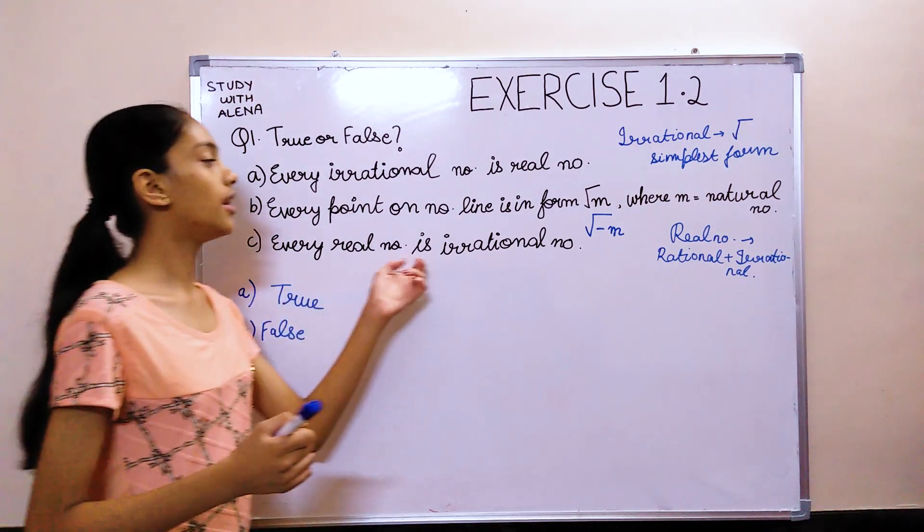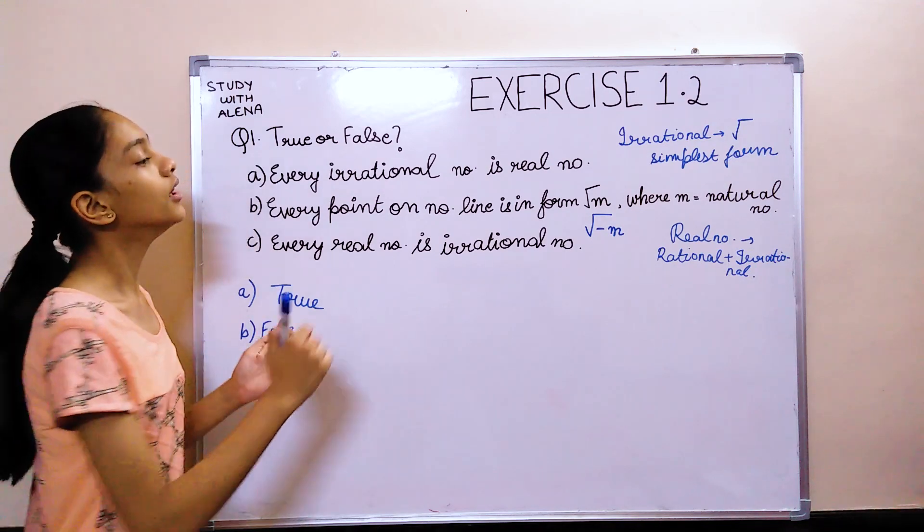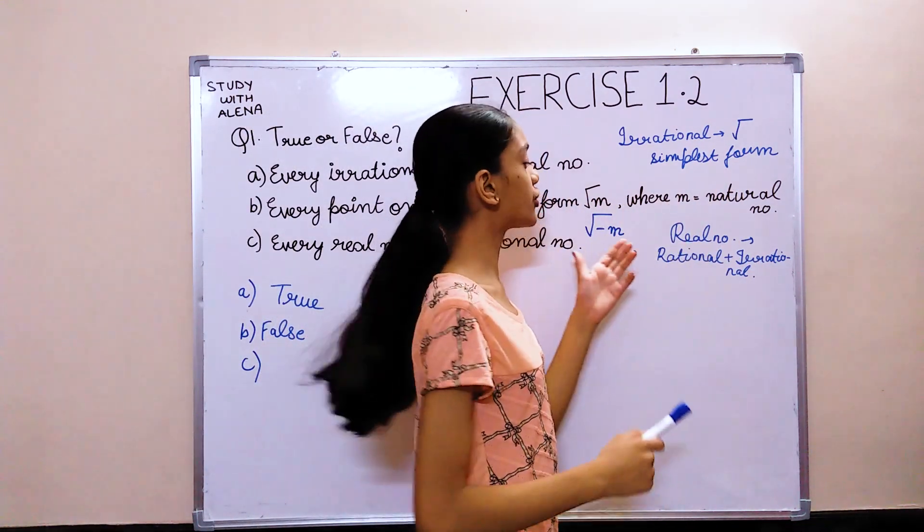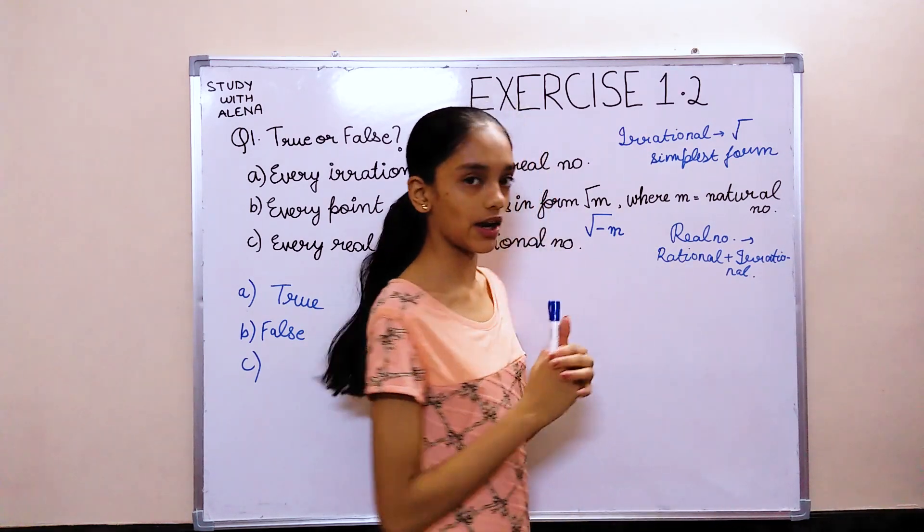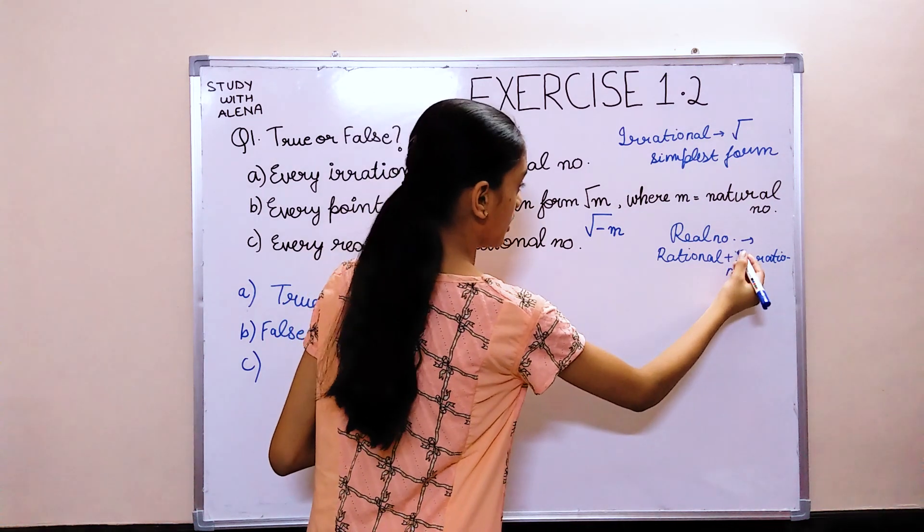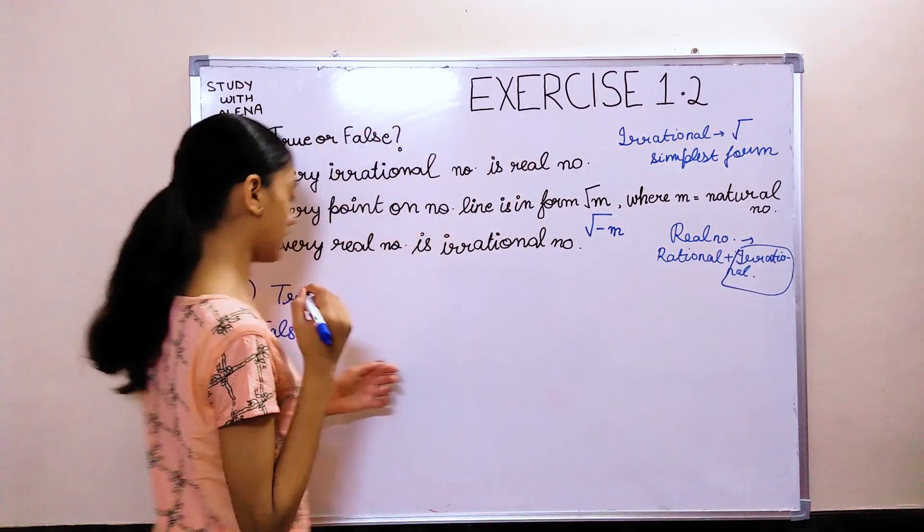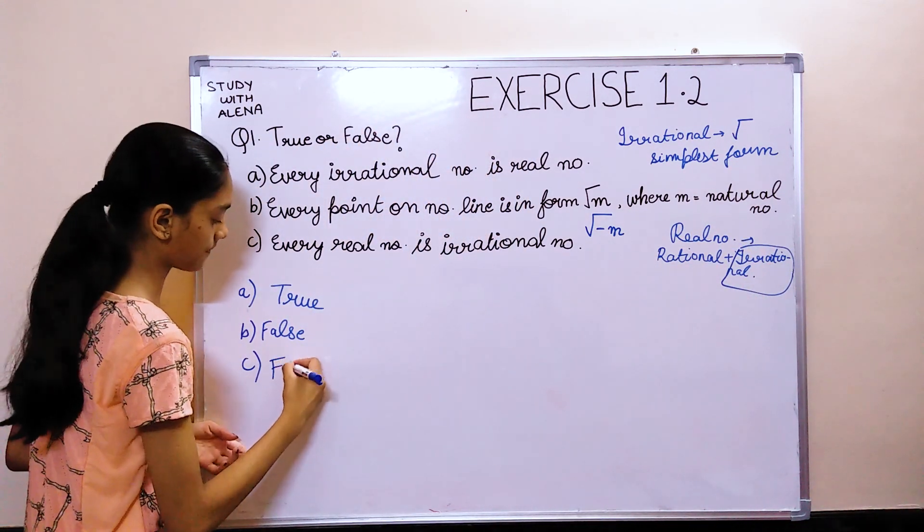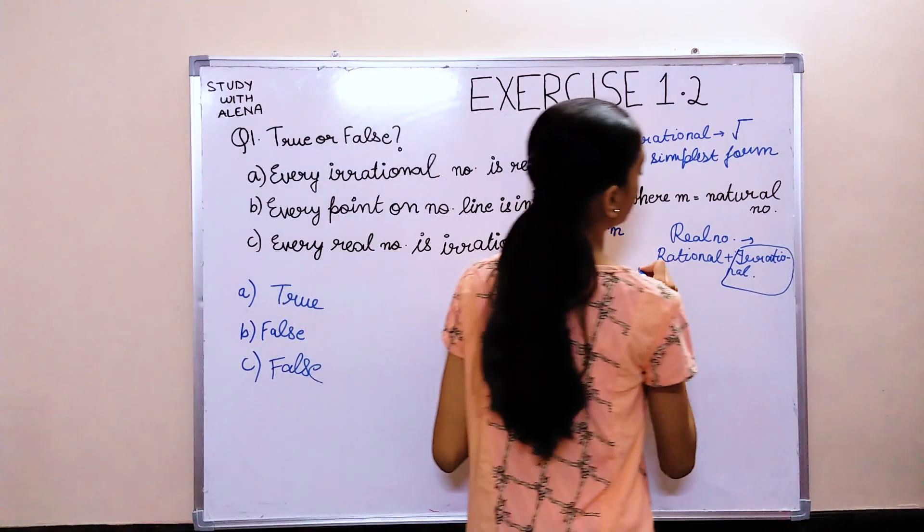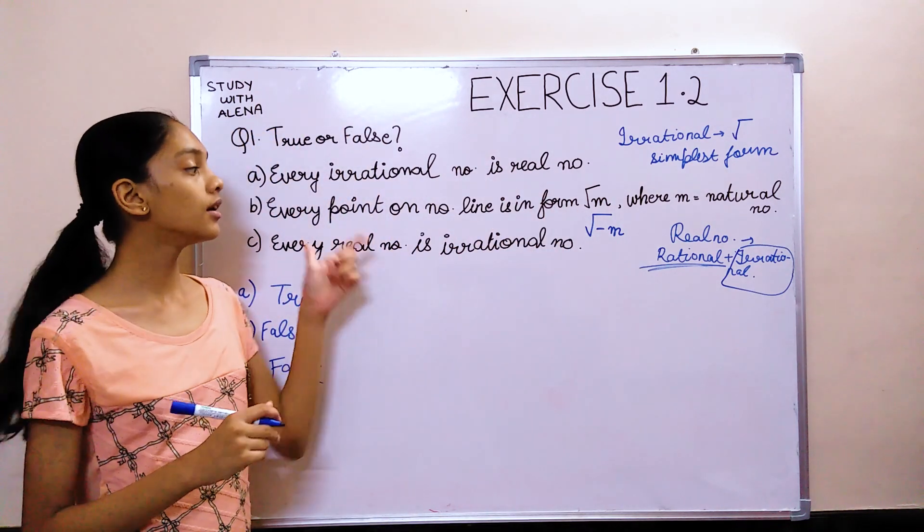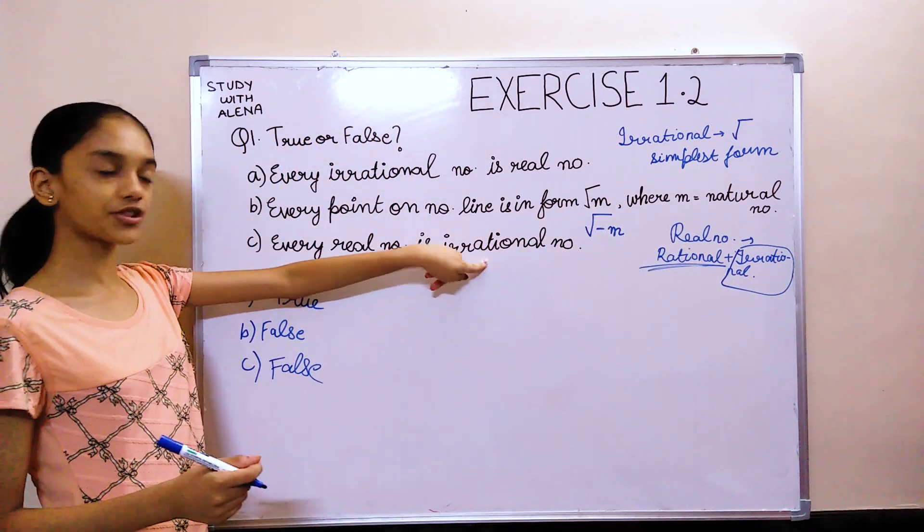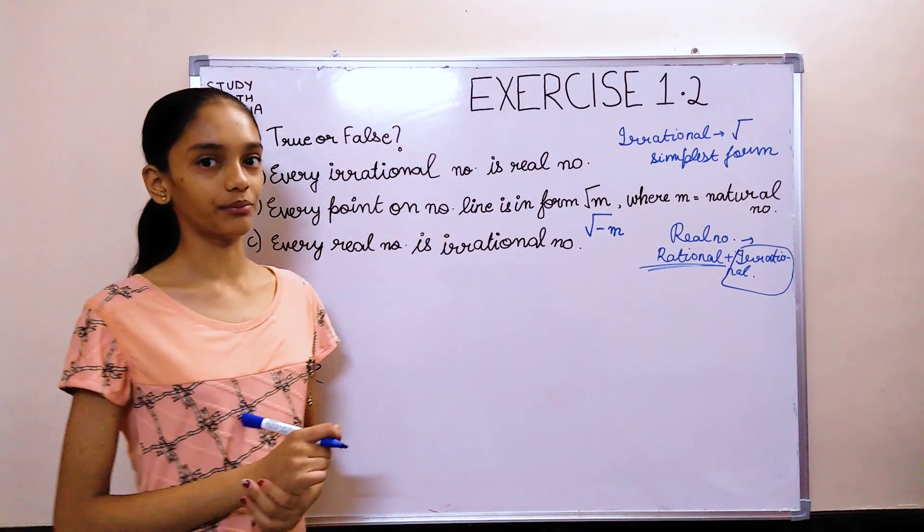Every real number is an irrational number. Now, the definition of real number is, it is a combination of rational and irrational. But, the question says that every real number is a rational number. That would be false. Because real numbers also have rational numbers. So, every real number cannot be an irrational number. But, every irrational number can be a real number.